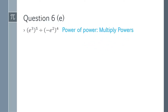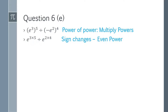Question 6e: (e^3)^5 divided by (-e^2)^4. Expand: e^(3×5) = e^15. Since power 4 is even, (-e^2)^4 = e^(2×4) = e^8. Subtract the powers: e^(15-8) = e^7. That is the answer.